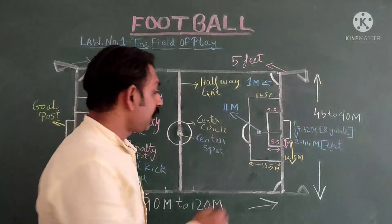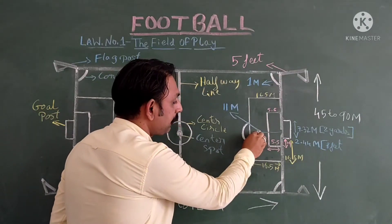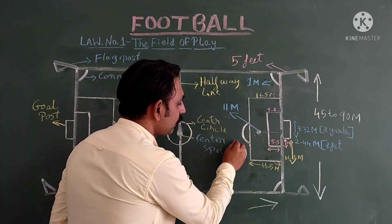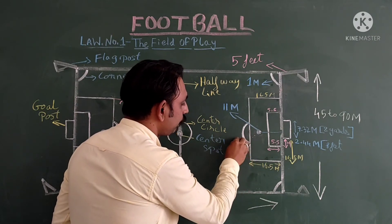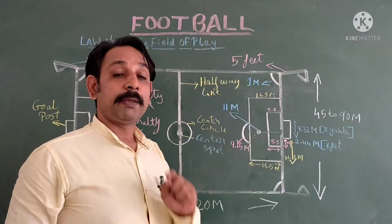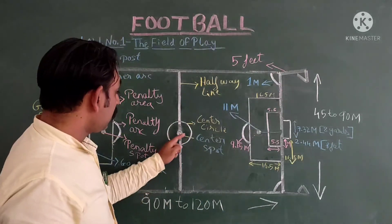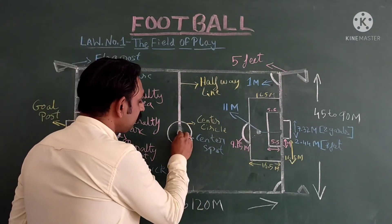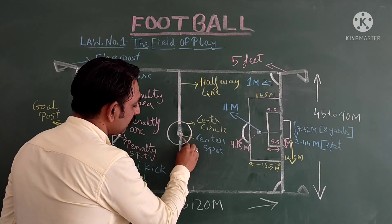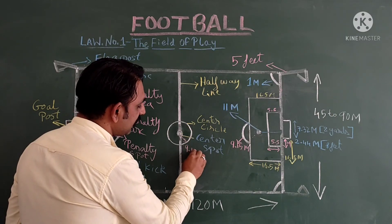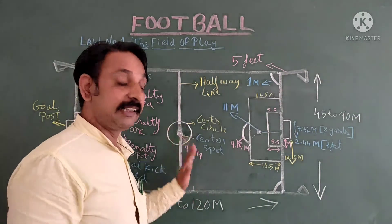You can see this arc — the penalty arc. From the penalty spot, a distance of 9.15 meters is drawn, and this becomes our penalty arc. Similarly, for the center circle, from the center spot we take a measurement of 9.15 meters and draw a circle, and this becomes our center circle.